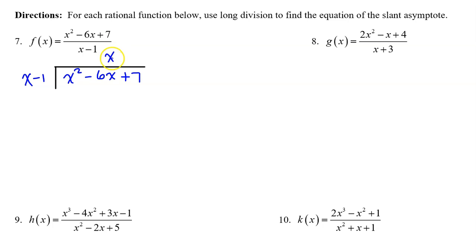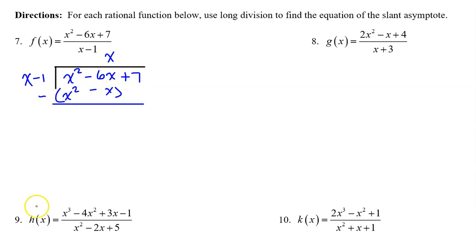Now multiply: take the x and multiply times x minus one. x times x is x squared, and x times negative one is negative x. Then subtract — these cancel out. Negative six x minus negative x is really negative six x plus x, so that's negative five x. Bring down the plus seven and start over. Divide negative five x by x and you get negative five — line that up.